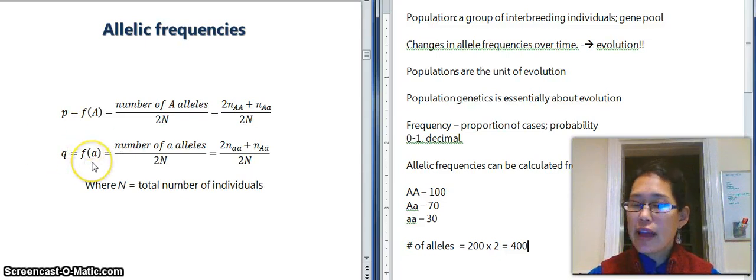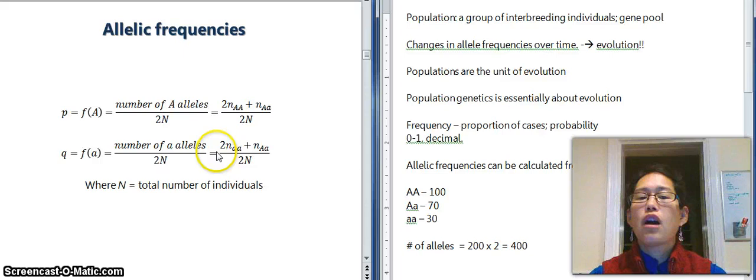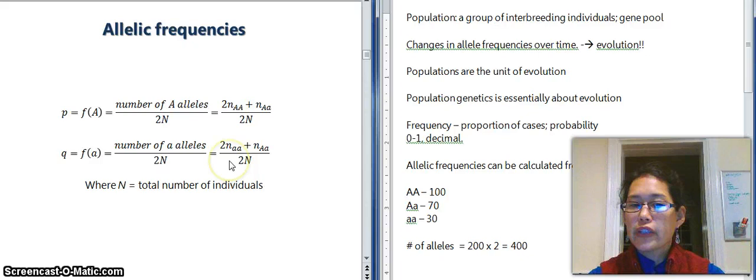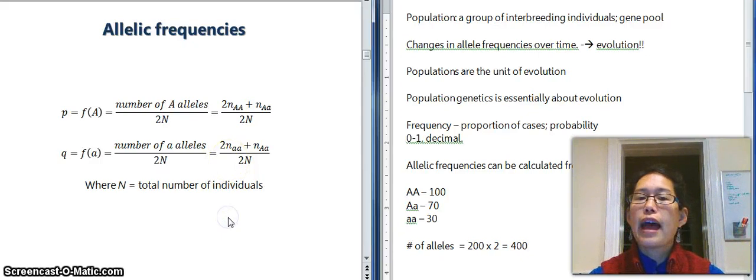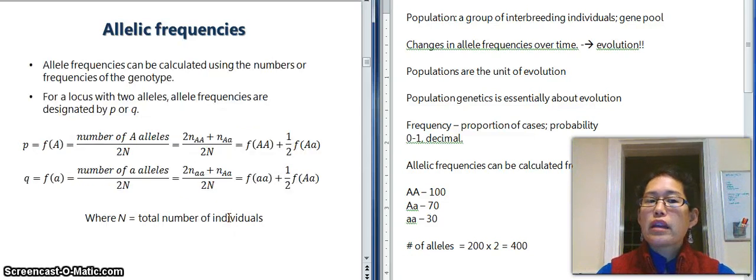Okay and then we can do that also for the q which is the frequency of little a where we have the number of little a alleles divided by 2N, otherwise known as the number of homozygous recessive individuals times two plus the number of heterozygous divided by the total number of alleles.